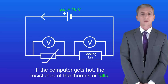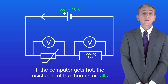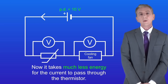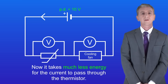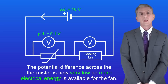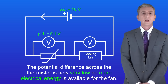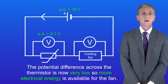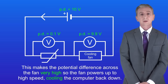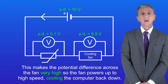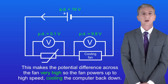If the computer gets hot, the resistance of the thermistor falls. It now takes much less energy for the current to pass through the thermistor, so the potential difference across the thermistor is very low. This means more electrical energy is available for the fan, making the potential difference across the fan very high. So the fan powers up to high speed, cooling the computer back down.